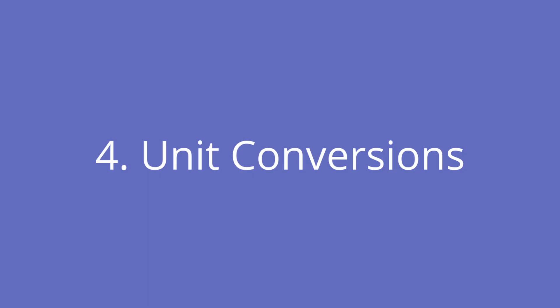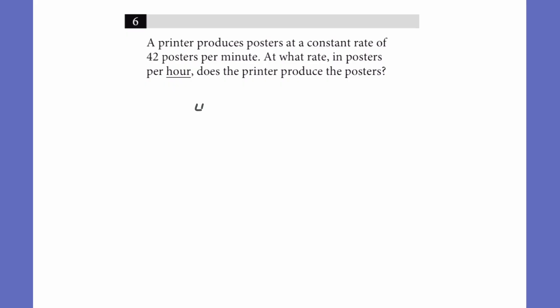Now, dimensional analysis is a really important skill, not just on the SAT, but also in real life. It's really great to be able to convert between different units quickly. And to do this in an organized fashion and make sure we don't miss anything, we can use dimensional analysis. So we want to write down the number we're starting with and figure out how to get where we want to go, what we want to end up with. So let's practice a simple dimensional analysis problem. We have a printer that produces posters at a rate of 42 posters per minute. And we want to convert that into how many posters can it do per hour. So for this problem, you'll need to know that there are 60 minutes in an hour. But the way dimensional analysis works is you'll try to get the same unit to be diagonal to each other.